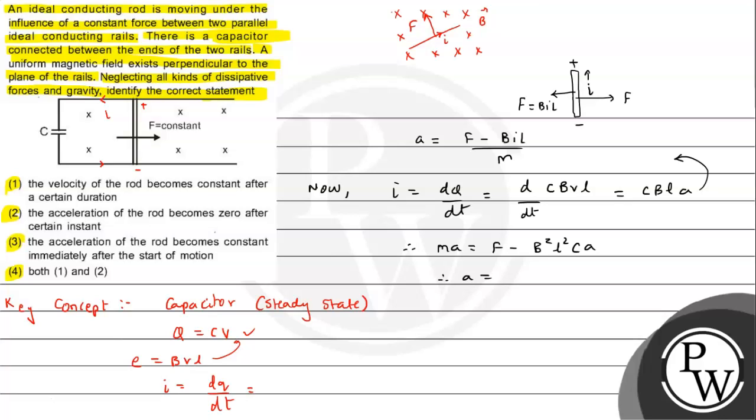From this, acceleration value that we are getting is coming out to be F upon m plus B squared L squared C, which is a constant value. So in that situation we can say acceleration of the rod becomes constant immediately, because the capacitor already is in a steady state.